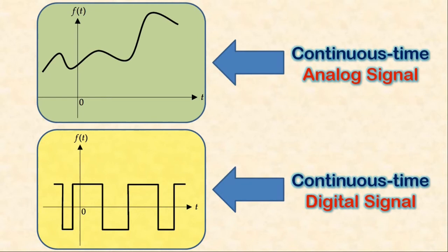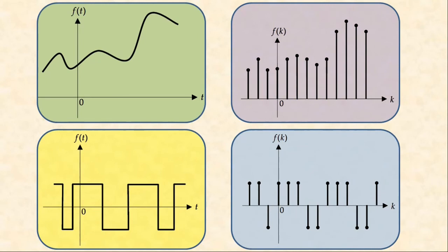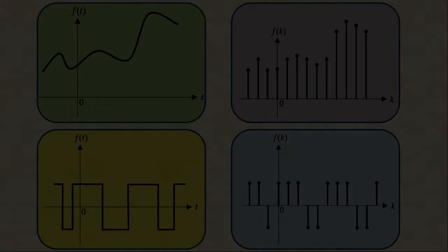One may derive the discrete version of a Continuous Time Signal just by sampling the signal at a uniform rate. Therefore, the discrete versions of these two Continuous Time Signals can be represented as shown on screen. This first signal is defined only at discrete instants along the time axis and the amplitude takes on an infinite number of values, so we must call it a Discrete Time Analog Signal. However, the second signal's amplitude takes on only a finite number of values, so we must call it a Discrete Time Digital Signal.